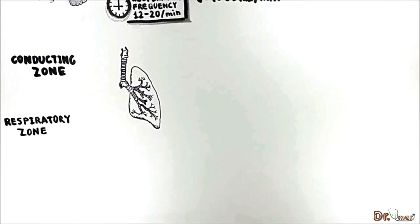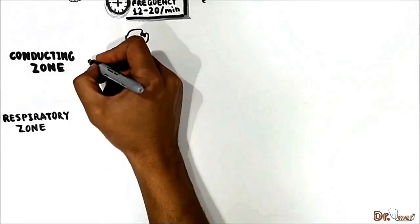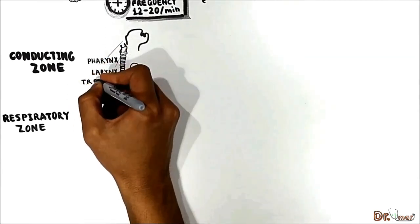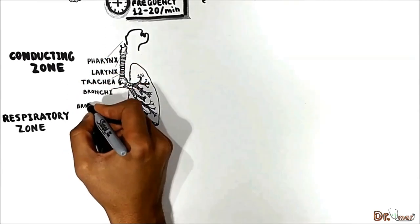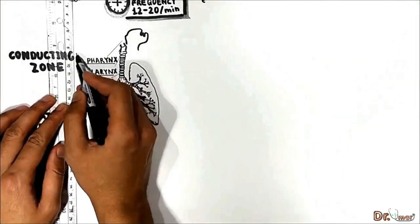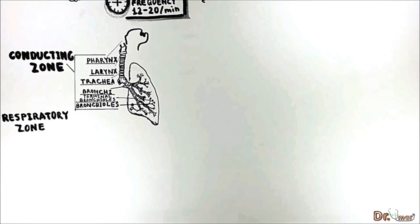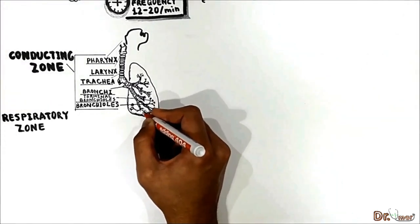The conducting zone of the lung system includes all the structures which air passes through before reaching the respiratory zone — the pharynx, larynx, trachea, bronchi, bronchioles, and terminal bronchioles. Their function is to filter, warm, and moisten air and conduct it into the lungs. The conducting zone adjoins to the respiratory zone.